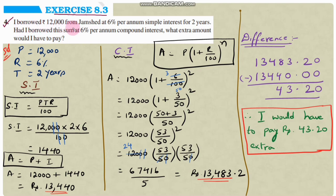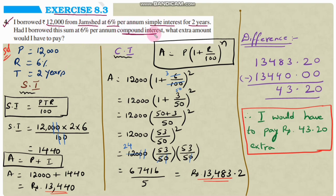Exercise 8.3 question number four: I borrowed rupees 12,000 from Jamshed at 6% per annum simple interest for two years. Had I borrowed this sum at 6% per annum compound interest, what extra amount would I have to pay? In this question we compare simple interest and compound interest for the same principal of 12,000 at 6% rate for 2 years.